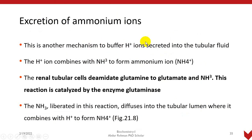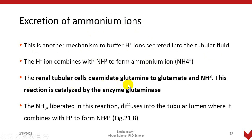The fourth mechanism is excretion of ammonium ions. This is another mechanism to buffer hydrogen ions secreted into tubular fluid. The hydrogen ion combines with ammonia to form the ammonium ion. The renal tubular cell de-amidates glutamine to glutamate and ammonia, and this reaction is catalyzed by the enzyme glutaminase.